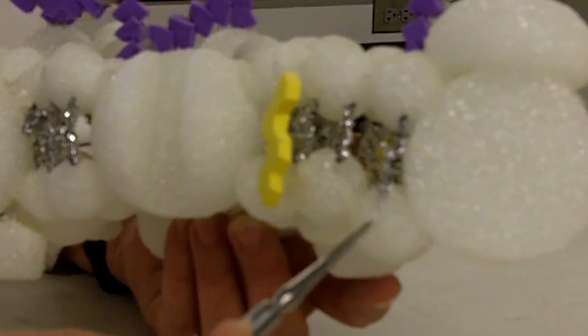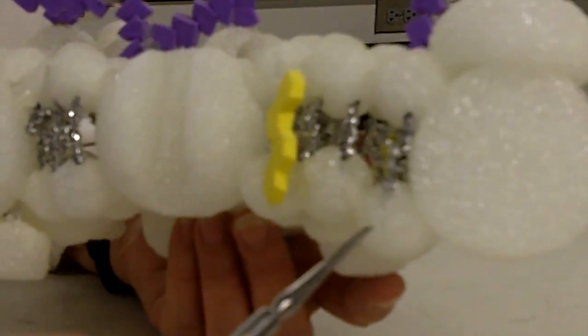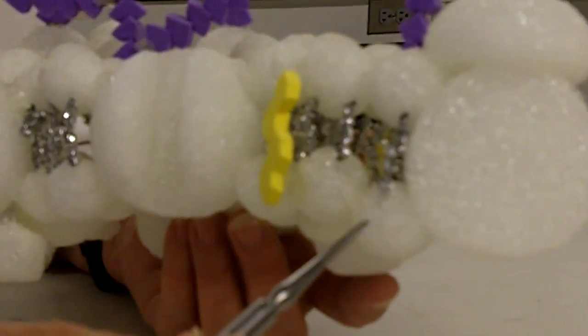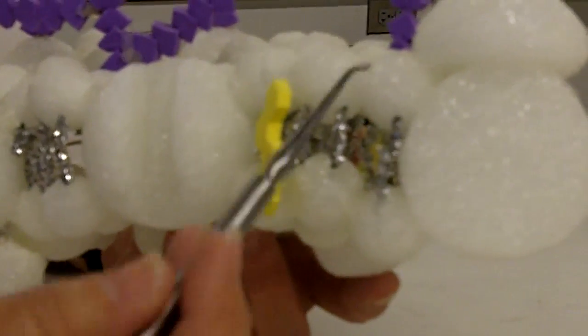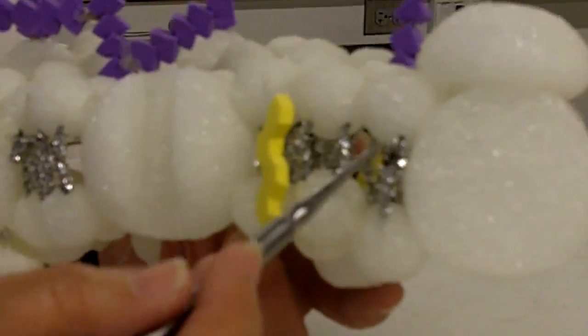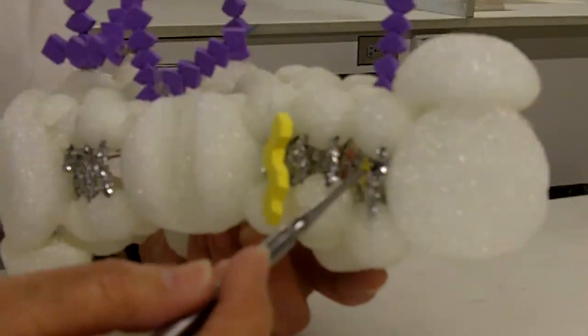The heads are what we call hydrophilic. They are water-loving, so they orient spontaneously towards the water. There's a lot of water outside the cell, a lot of water inside the cell, so the heads face the water. And the lipid tails face each other, and these tails are called hydrophobic.